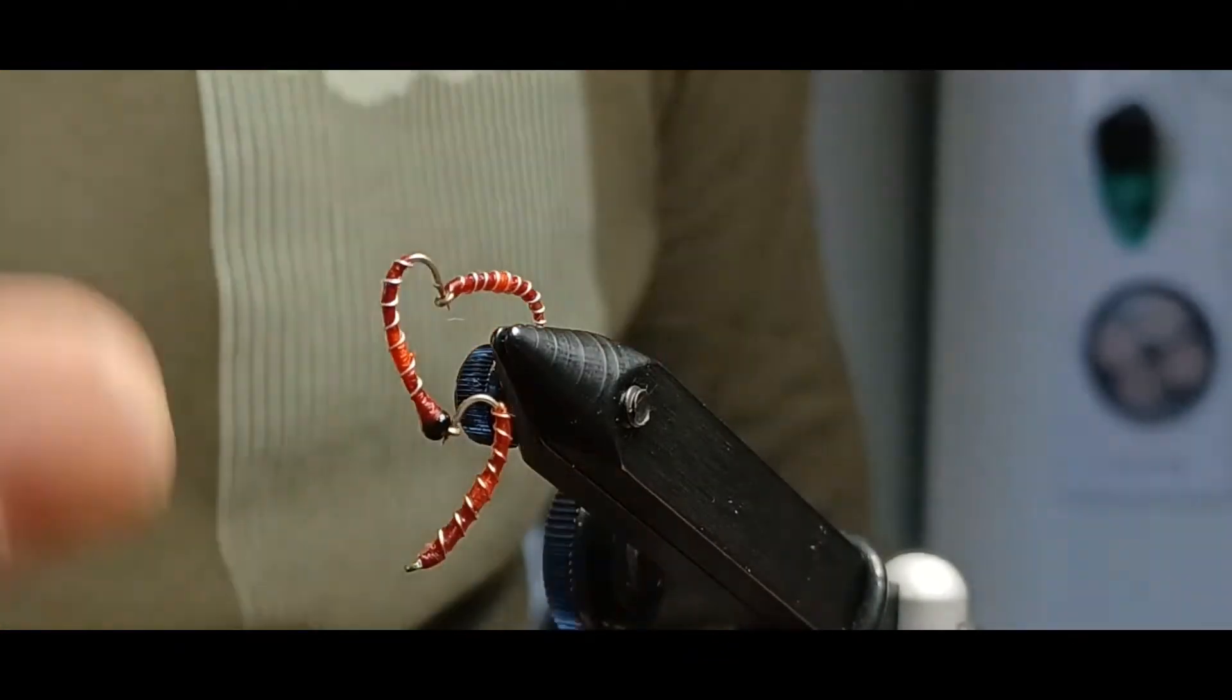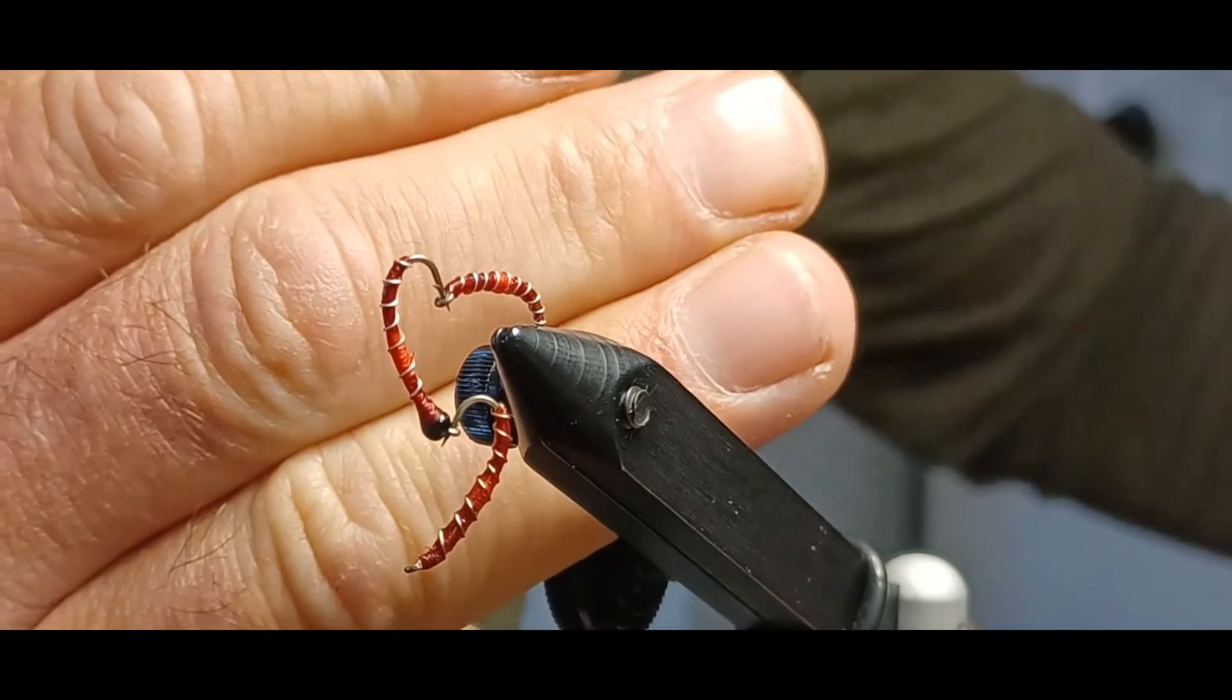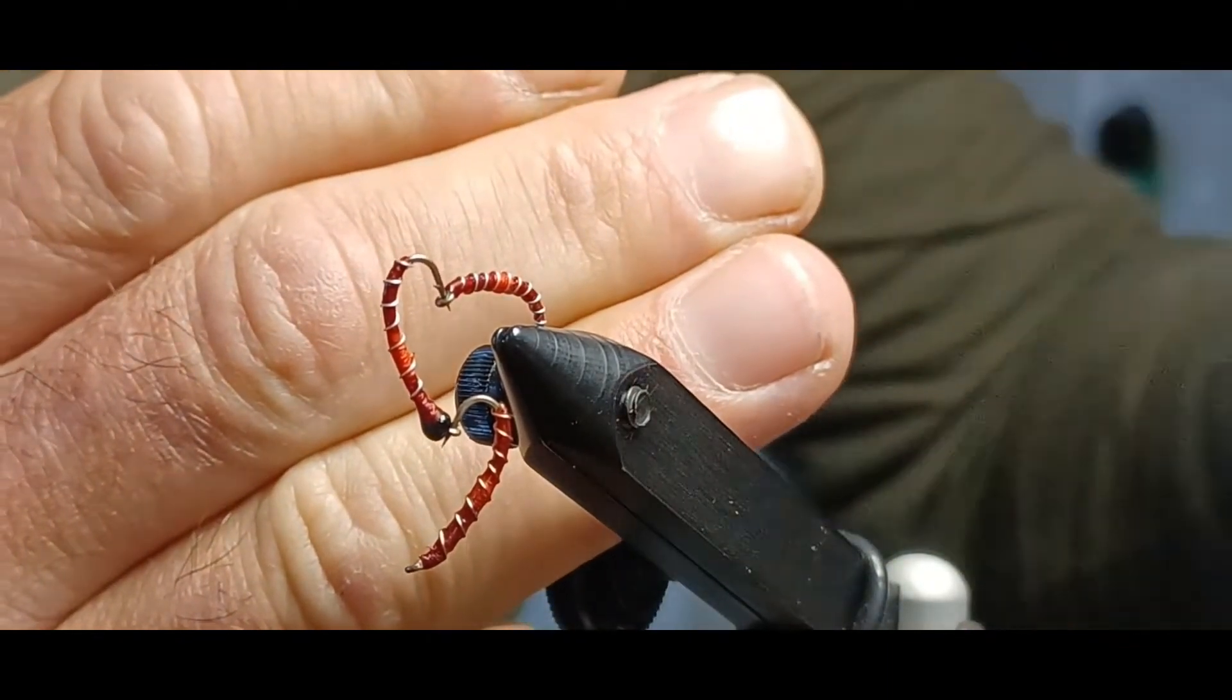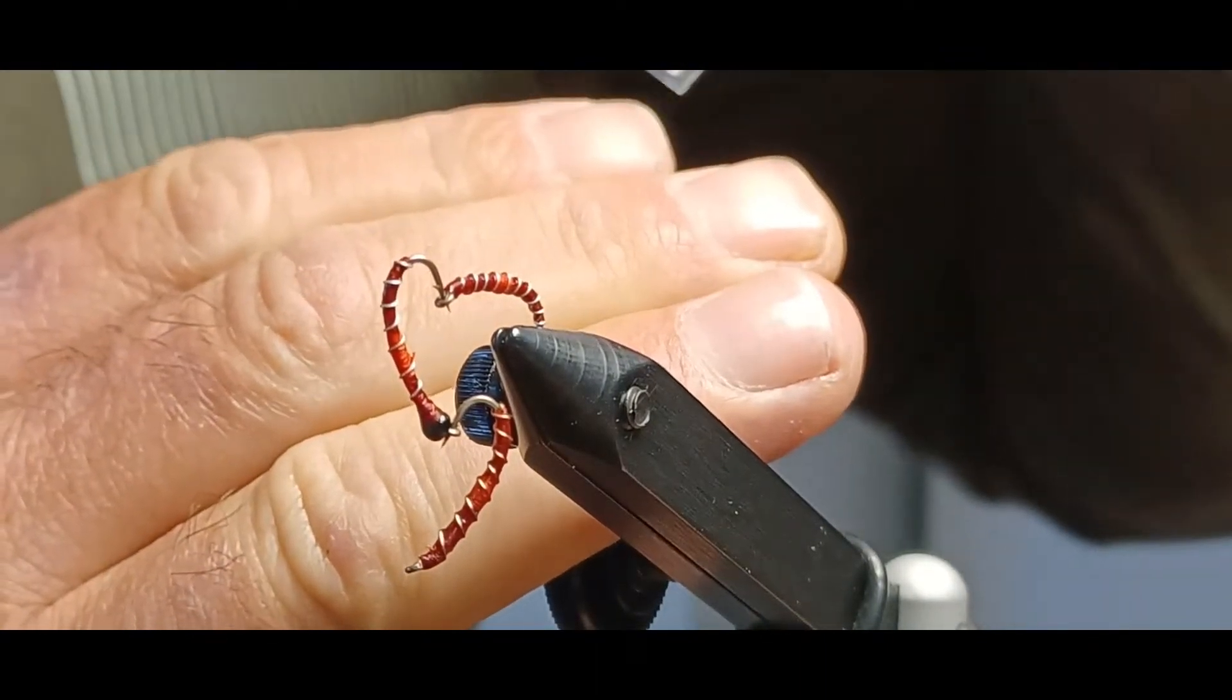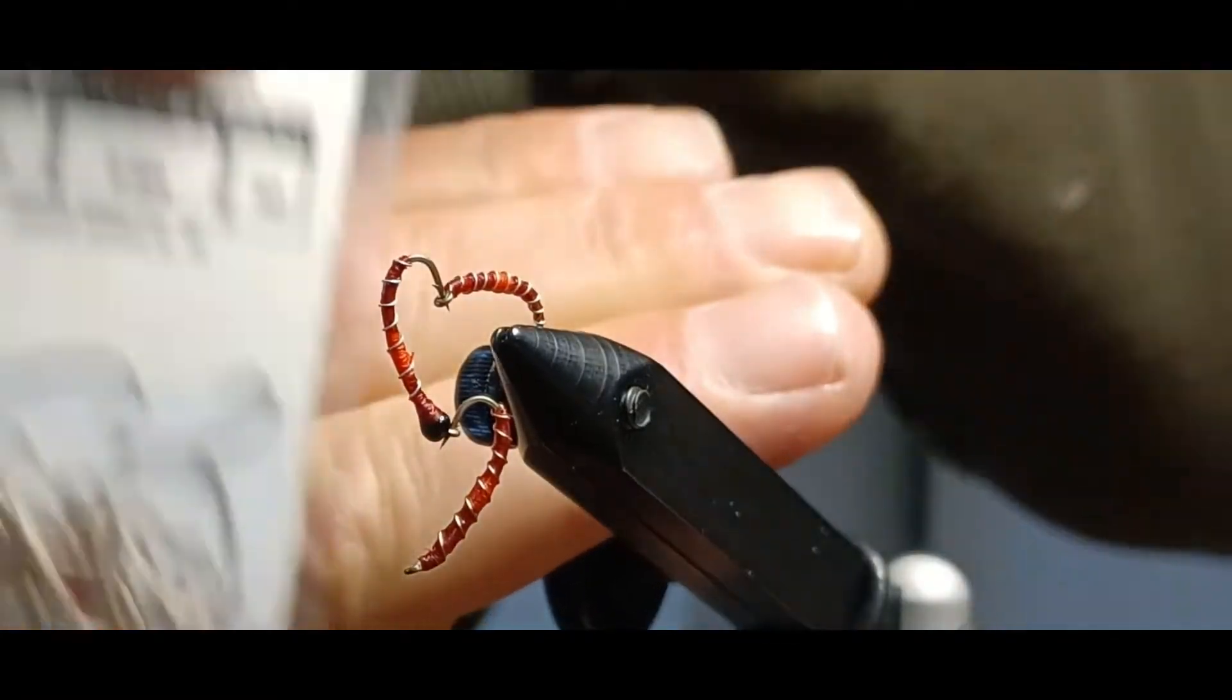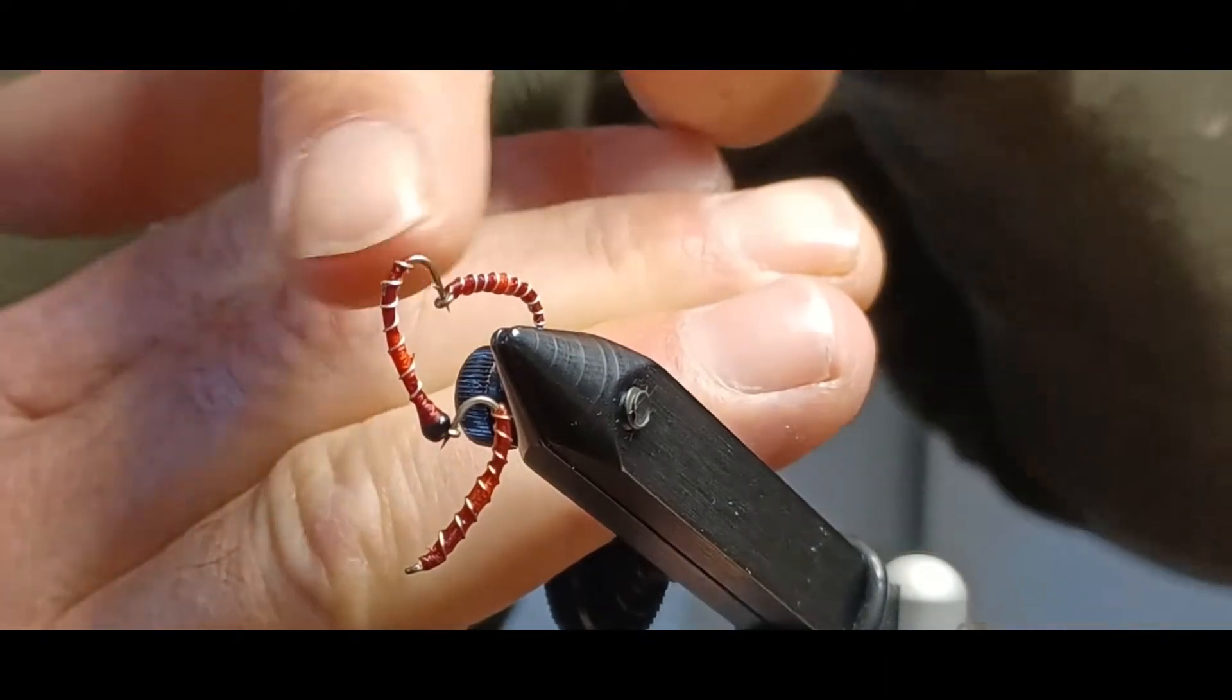Hello. Today we're going to be tying this fly here. This is the pig sticker, and we'll be tying it on an Umpqua size 14 U204 curved down-eye 2X long hook. We'll be tying the variation here with the glass bead in the front.